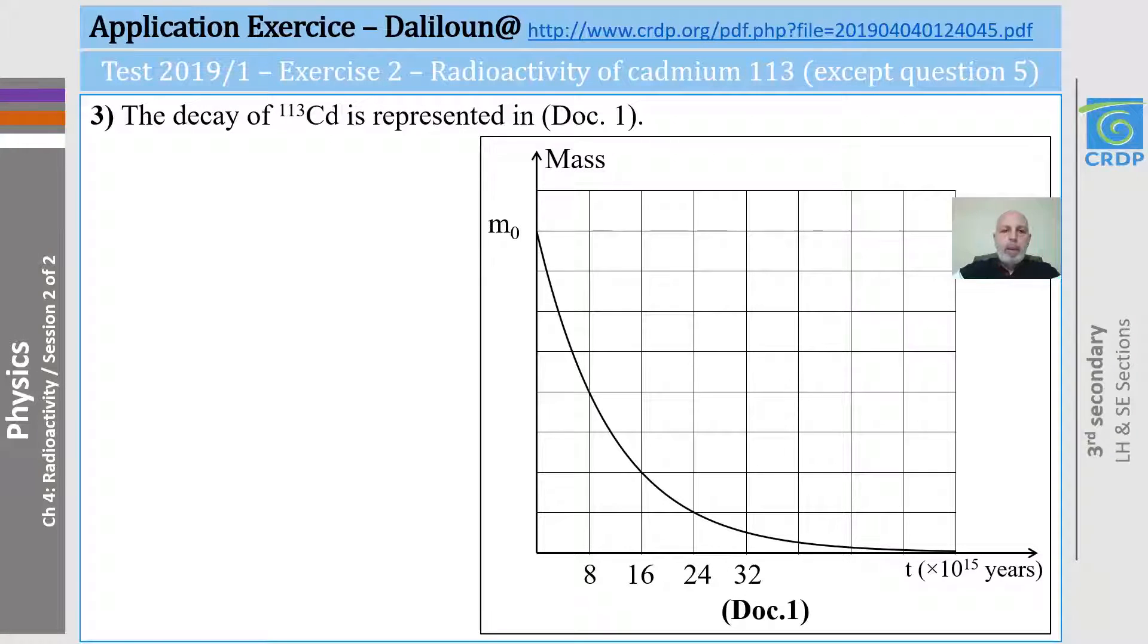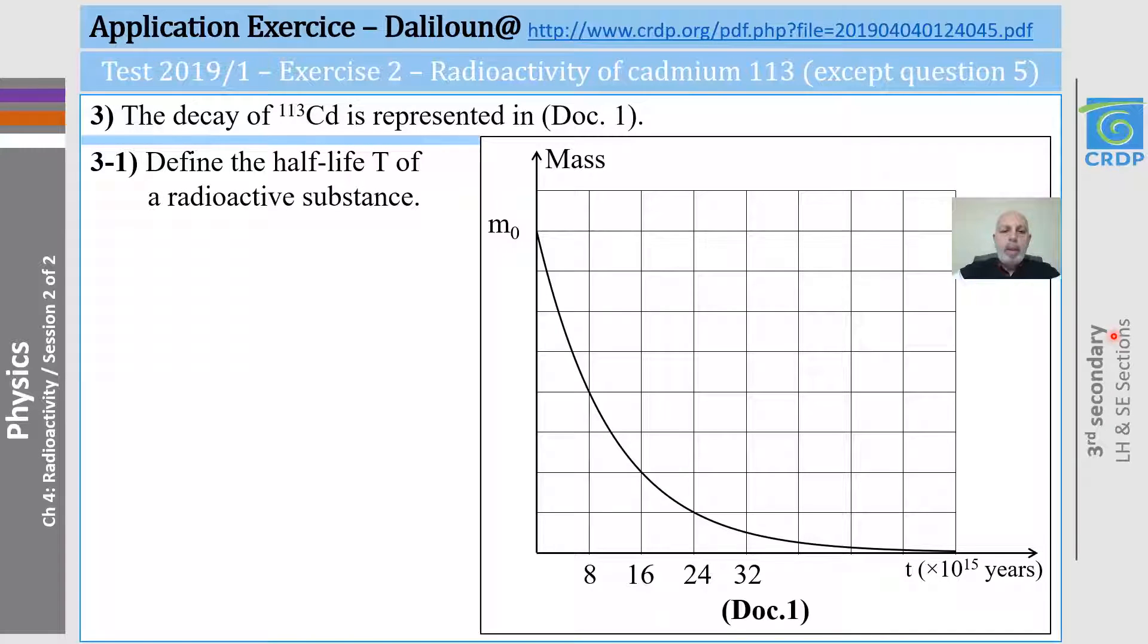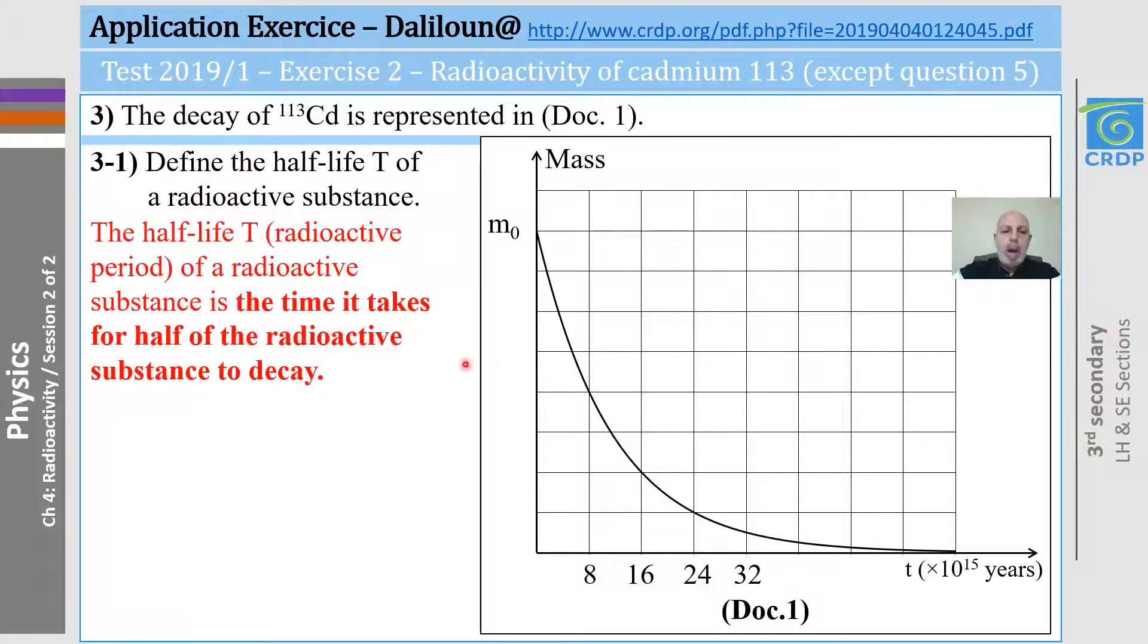Now, for question number three, the decay of cadmium-113 is represented in document one that gives us the mass as a function of time t times 10 to the 15 years. I want to remind you that we said that it's the time it takes for half of the radioactive substance to decay.